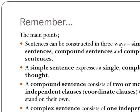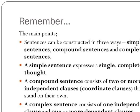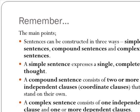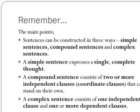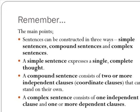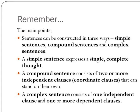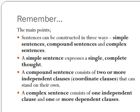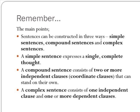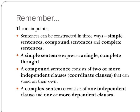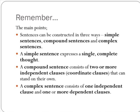Here is what we learned today about the three basic types of sentences. Sentences can be constructed in three ways: simple, compound, and complex. A simple sentence expresses a single, complete thought. A compound sentence consists of two or more independent clauses, also known as coordinate clauses, that can stand on their own. A complex sentence consists of one independent clause and one or more dependent clauses.